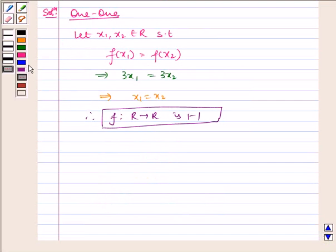Now let us check for onto. Let y be any real number in R of co-domain.